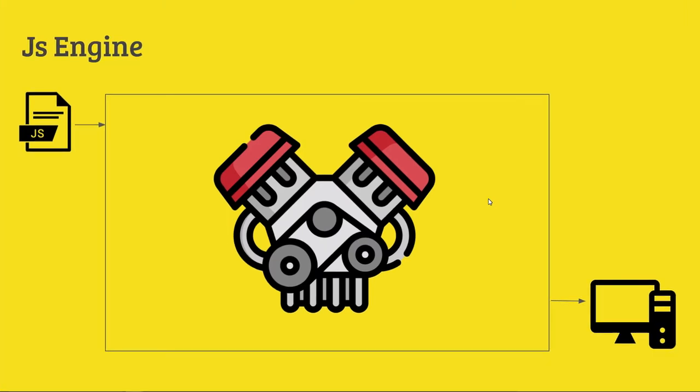Hi, welcome. Today we are going to talk about the JavaScript engine. We are going to recap very simply. Given a JavaScript engine, eventually code is converted to 0s and 1s.